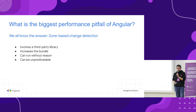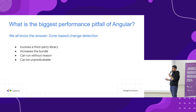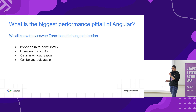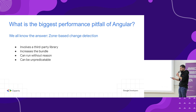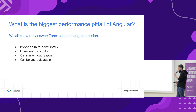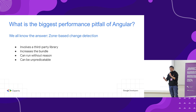Why is Zone.js bad, or kind of bad? Well, first of all, it involves a third-party library — a library that is not built by the Angular team and requires maintenance, both from the Angular team. Sometimes they are sort of forced to go into Zone.js, create pull requests, work with the team that maintains Zone.js. And it, of course, as a third-party dependency, it increases our bundle size. That's already not ideal.